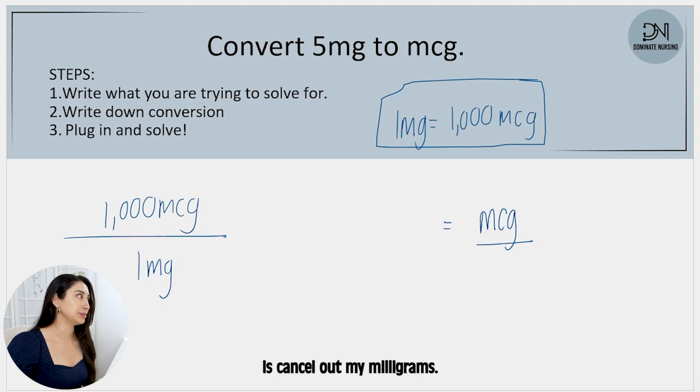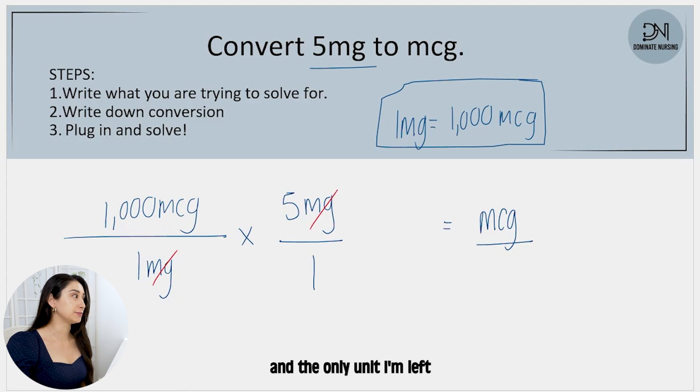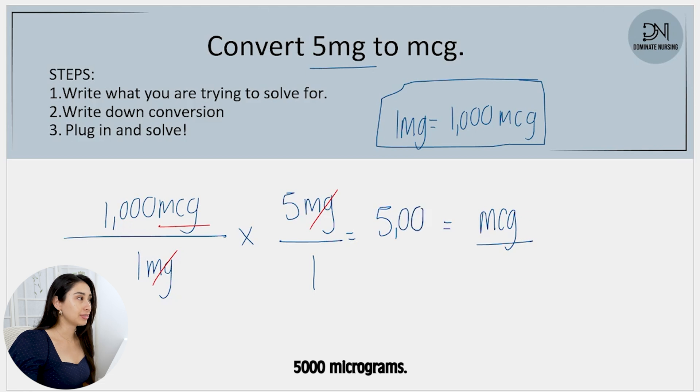So what am I going to do? I'm going to use these 5 milligrams to cancel out by putting the 5 milligrams on the top. I can just put that over 1. Now I can actually cancel out my milligrams, and the only unit I'm left with is micrograms, which is exactly what I need. So now I can go ahead and solve. 1000 times 5, my final answer will be 5000 micrograms.